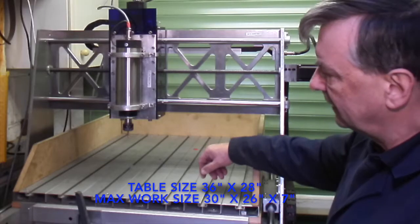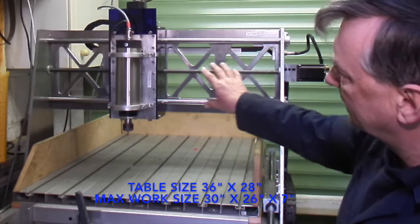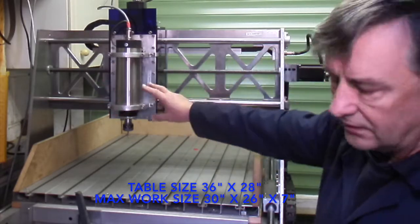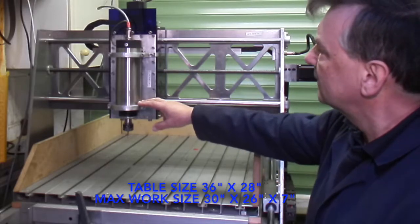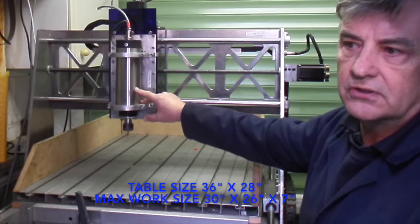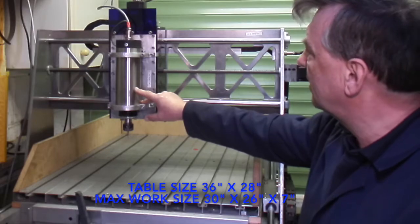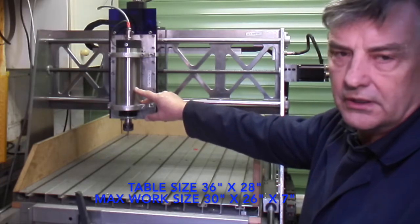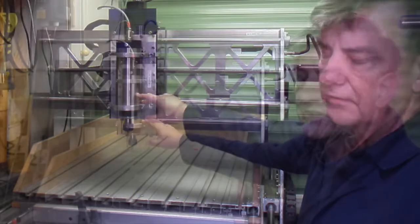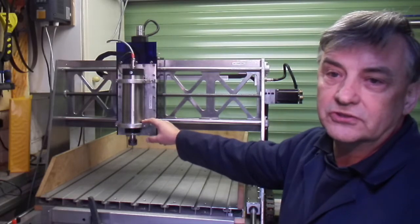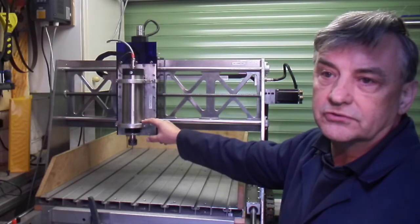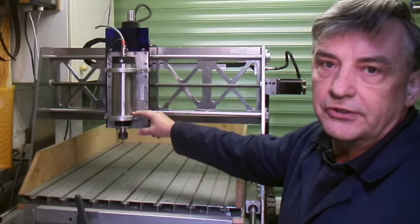This is the machine. It's a gantry machine which basically means that it has a gantry with the motor fitted onto it. It's a 2.2 kilowatt air-cooled spindle powered by an inverter. So the input voltage is between 220 and 250 volts, so it works on the UK mains.